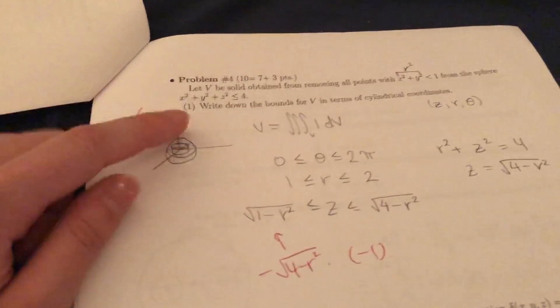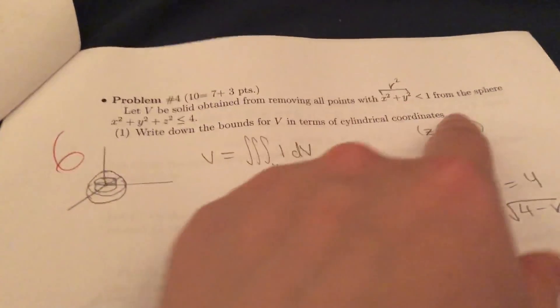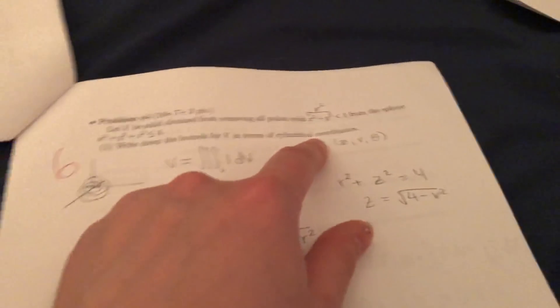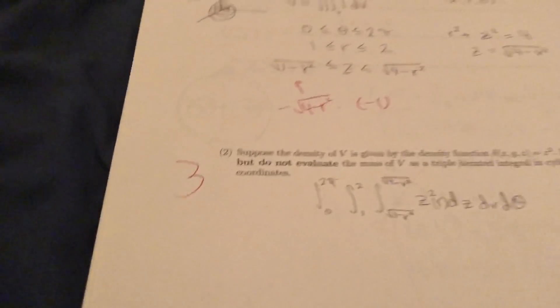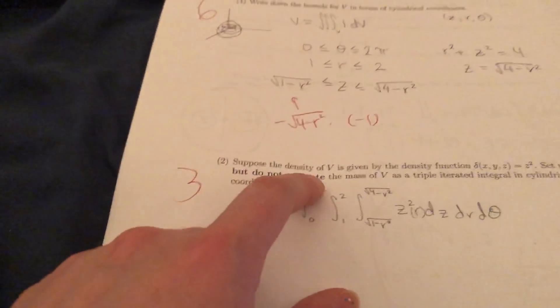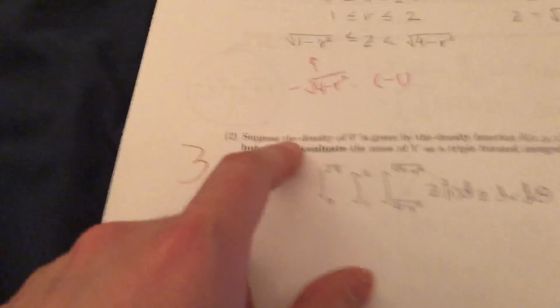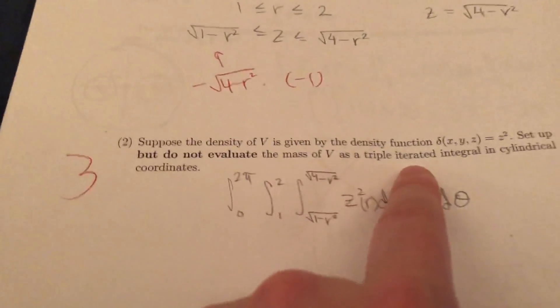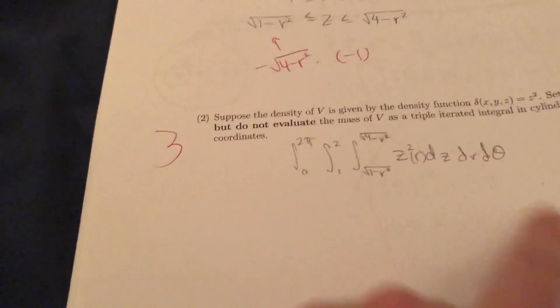Next problem, v is a solid obtained from moving all points with this from the sphere of this, right? The boundary is for v in terms of the cylindrical coordinates. So this is knowing what cylindrical coordinates are. And apparently I didn't do so well. And this one, suppose the density of v is given by the density function this. So density function problem. Set up but do not evaluate. Again, this kind of thing, really common. The mass of v is a triple iterated integral in cylindrical coordinates. So I set it up. Hooray.